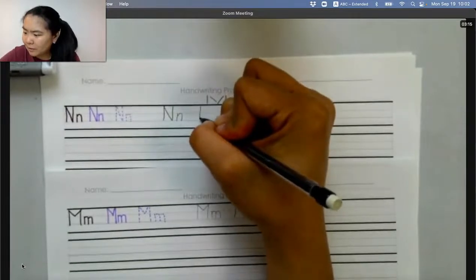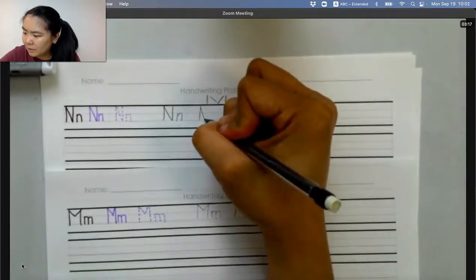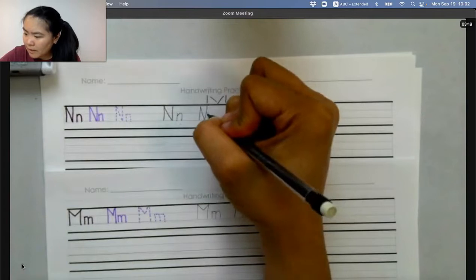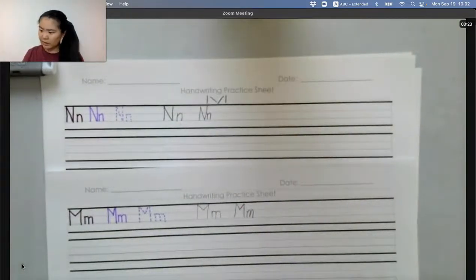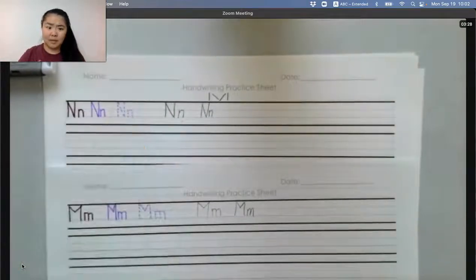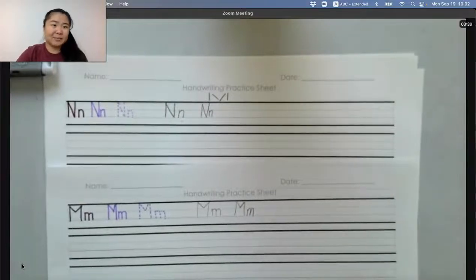A bit faster. N. N says N like noon and nose. Good. So M and N. M and N. Good job.